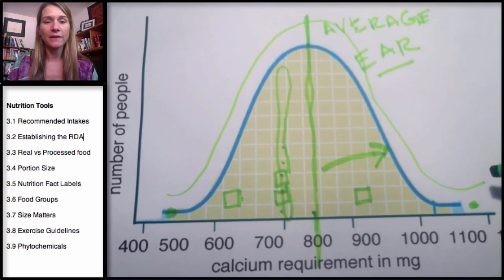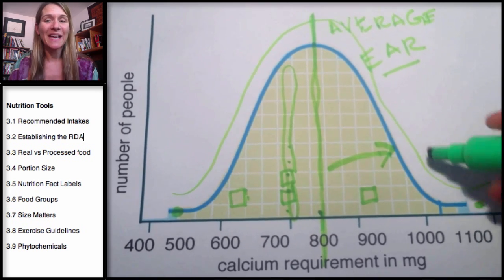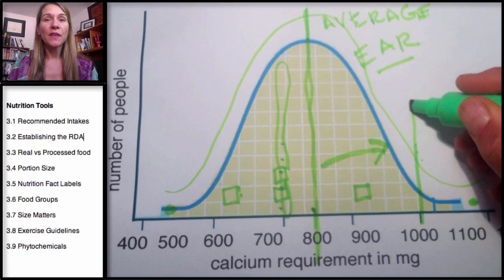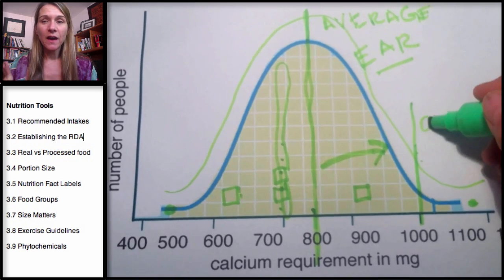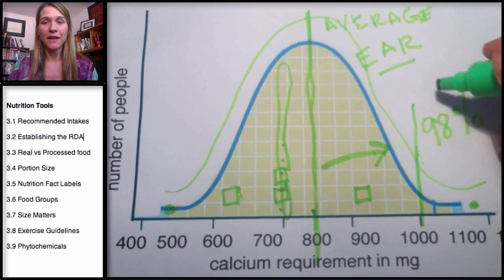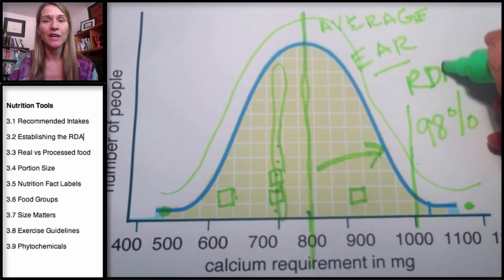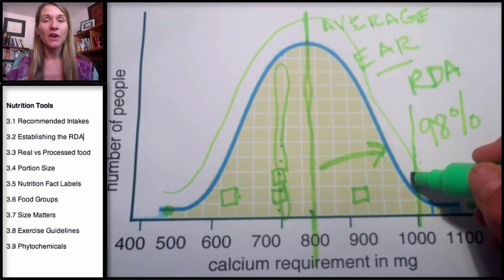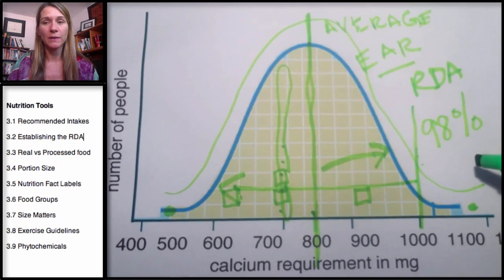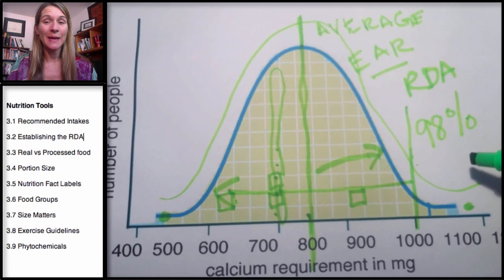Everyone who needs more than that 750 or 800 milligrams is not going to get enough. What about the person who needs 1,100? So the RDA is set at 98%, meaning 98% of the population is going to be covered with that recommendation.